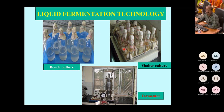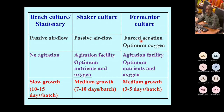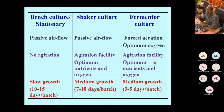The fermentor works quickly because it is fully automated with forced aeration and optimum nutrient and oxygen supply, giving quick growth. In three to five days, one batch can be completed. Under high demand, we use the fermentor culture; for less requirement, we use the shaker culture where one batch is ready in 7–10 days. Bench culture takes the longest time.